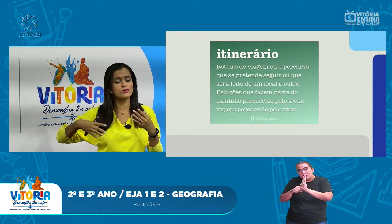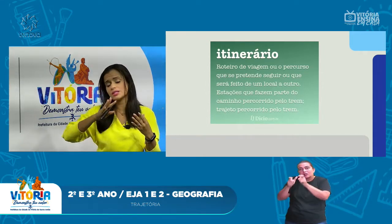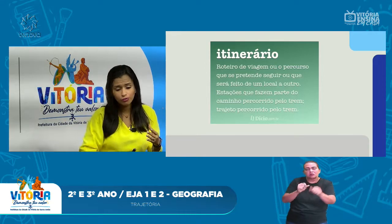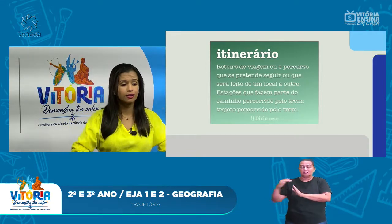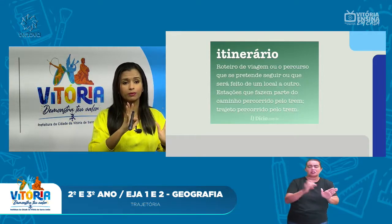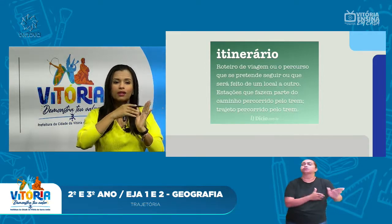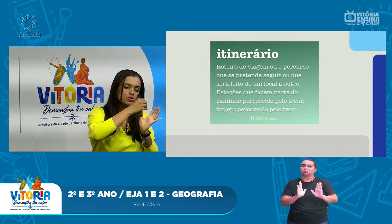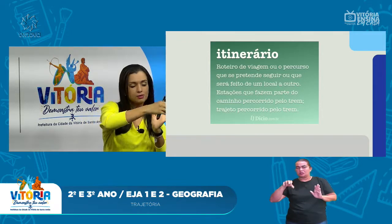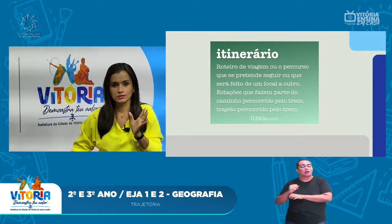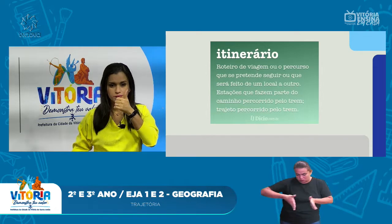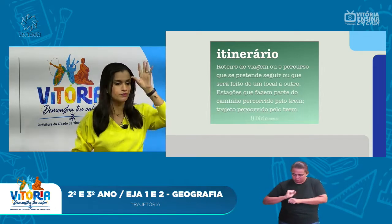Because with a trajeto you can simply say, 'I'll take this street, then that one, walk along that avenue, and that's it.' But ITINERÁRIO specifies the particular points that will be encountered within your route.